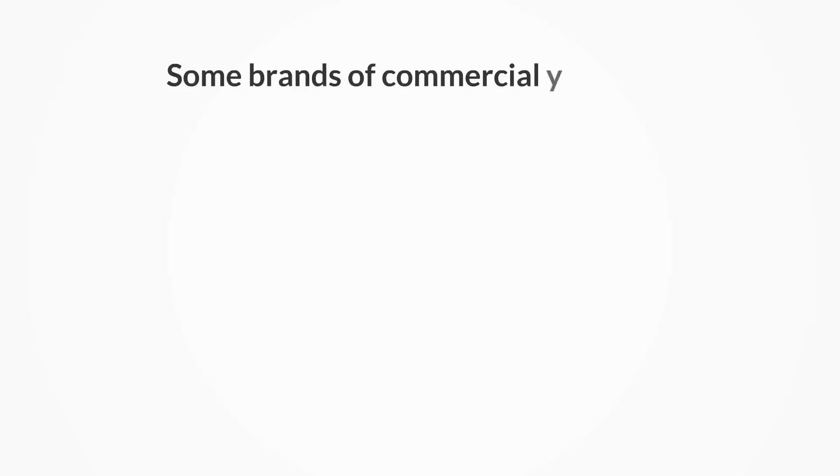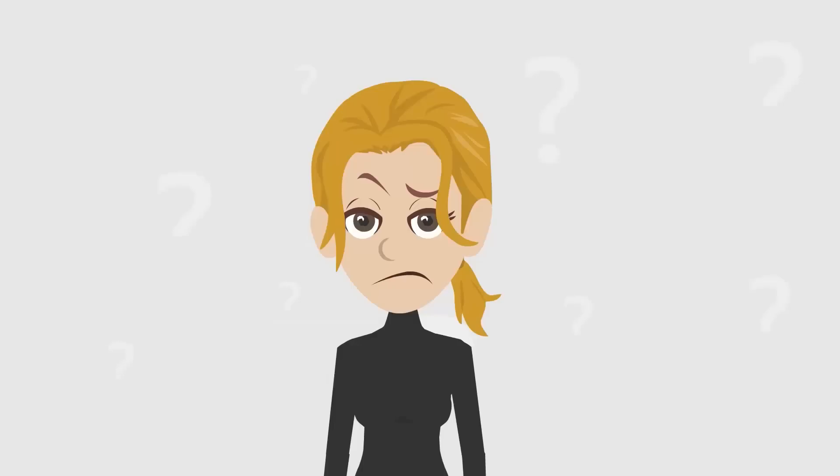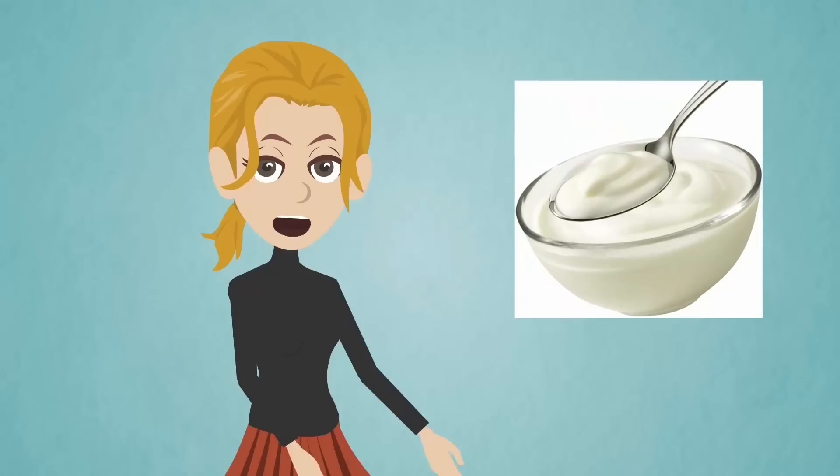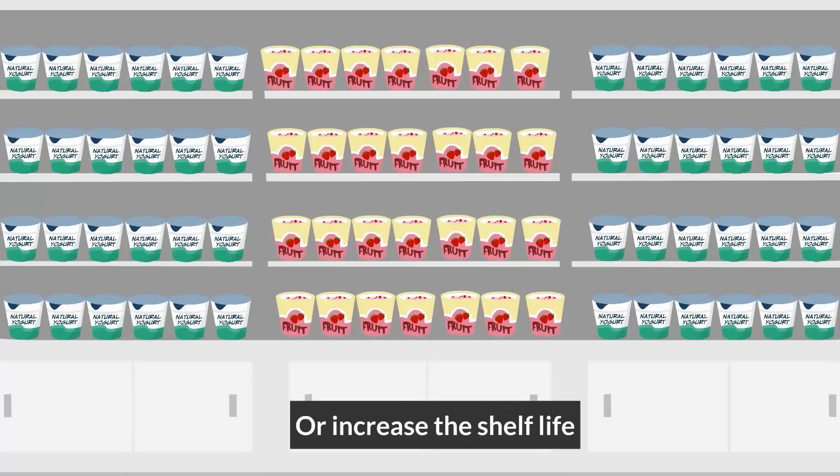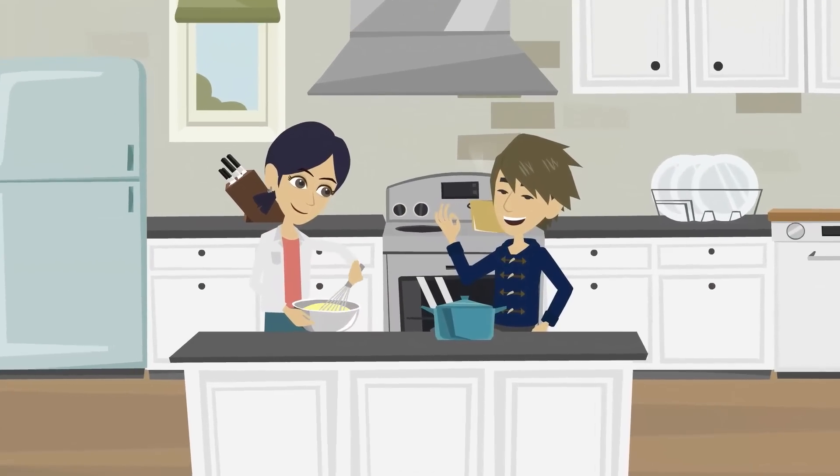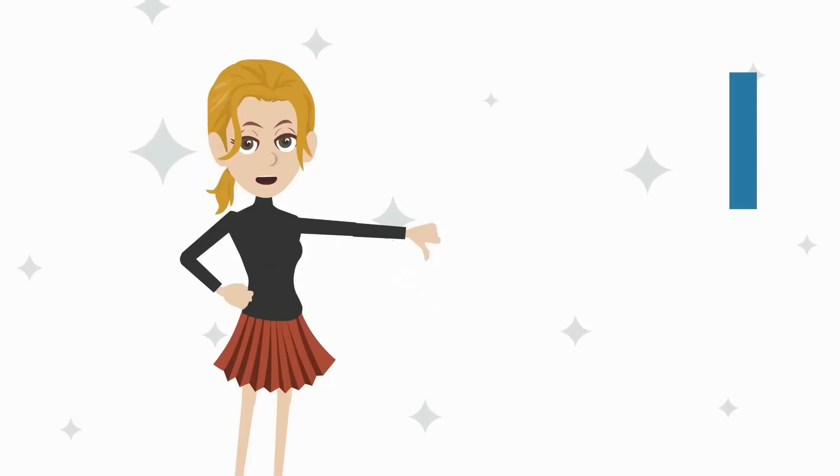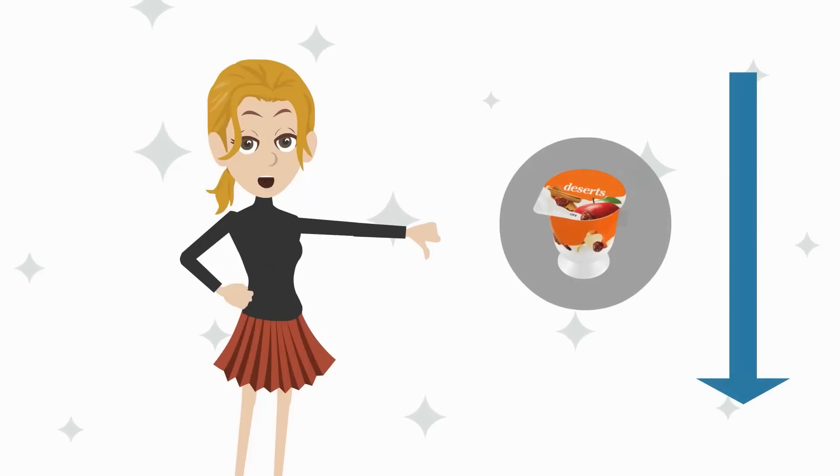Some brands of commercial yogurt are pumped with dry milk, maltodextrin, additives and sugar. Why? Those elements make the yogurt thicker or increase the shelf life. Some people find yogurts made with them even tasty. However, in some cases they reduce the amount of the good healthy bacteria and downgrade the best dairy food into just a sweet pudding with yogurt taste.